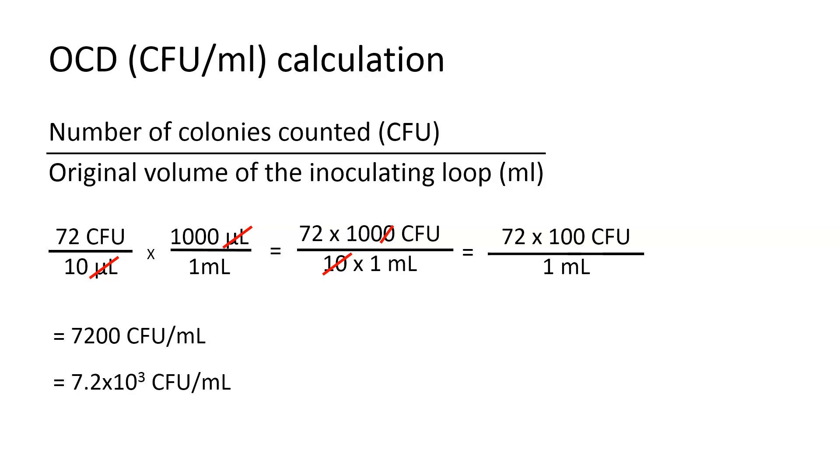Calculating OCD, original colony density, is a simple math calculation that tells us how many CFU, colony forming units, are present in each milliliter of the original sample.